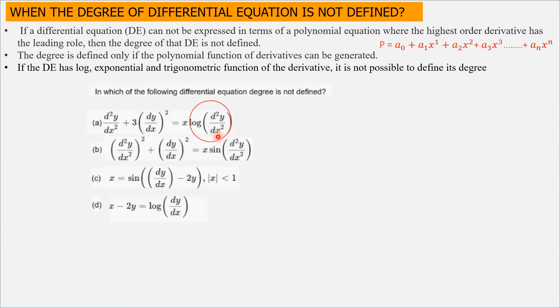As we know, polynomials don't have log terms. Even if we write this equation in exponential form with this term as a power, it is still not polynomial because polynomials don't have exponential terms. Hence, the degree is not defined in option A.